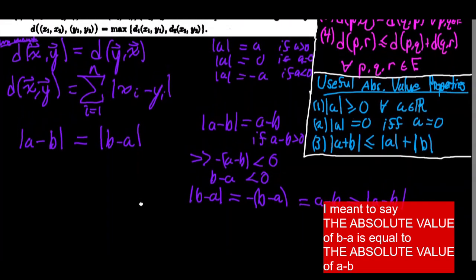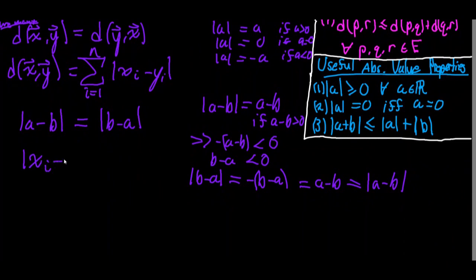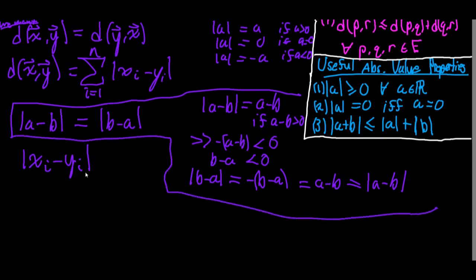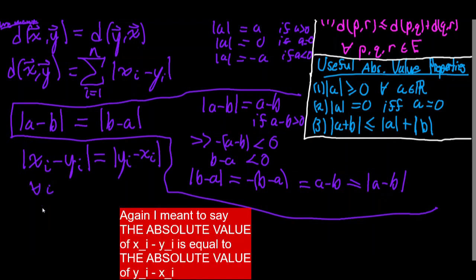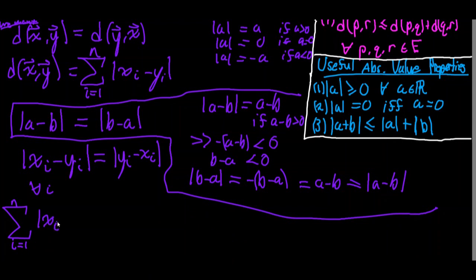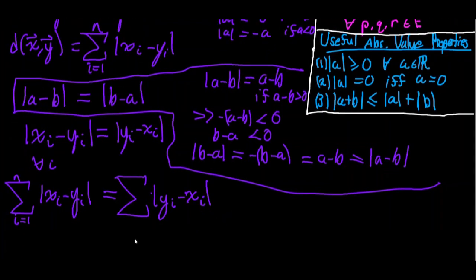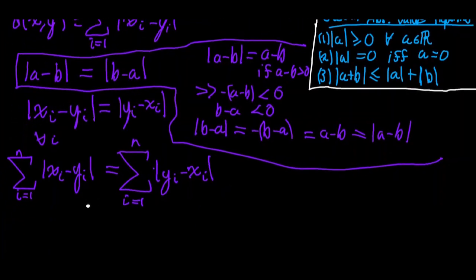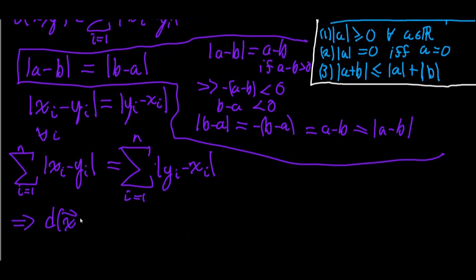Therefore, the absolute value of xi minus yi equals the absolute value of yi minus xi for all i. So the sum from i equals 1 to n of the absolute value of xi minus yi equals the sum from i equals 1 to n of the absolute value of yi minus xi, which means the distance between x and y equals the distance between y and x. Property 3 is proven.